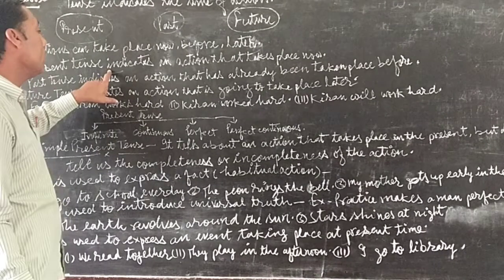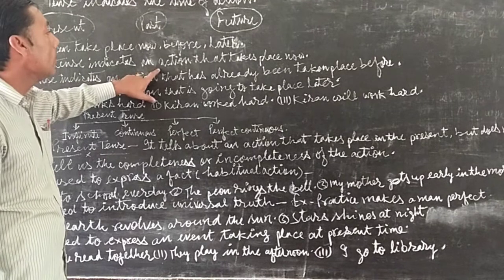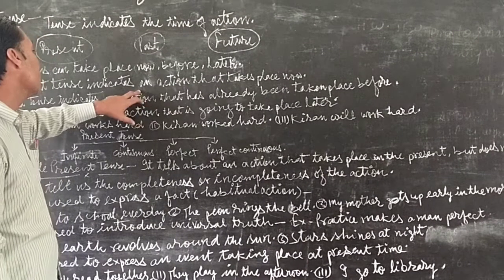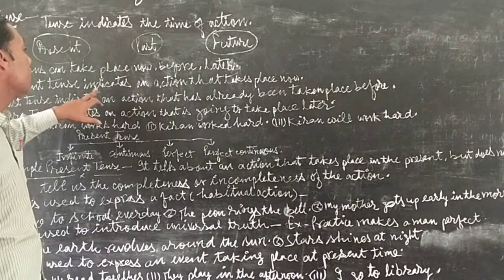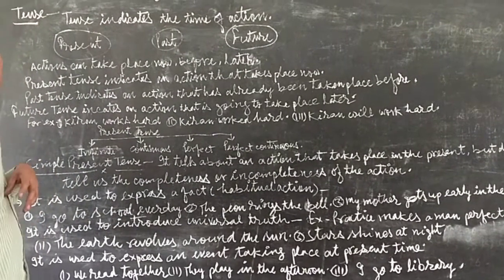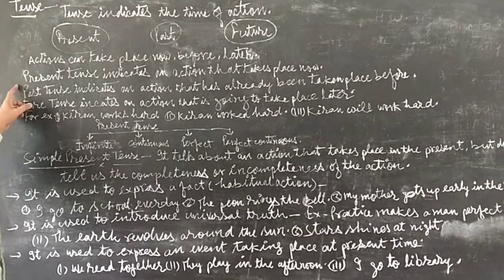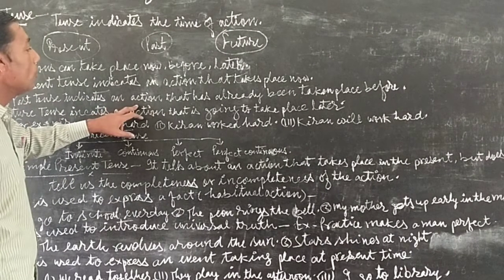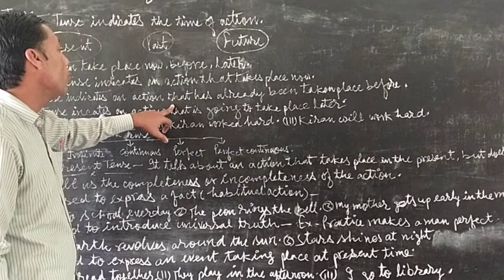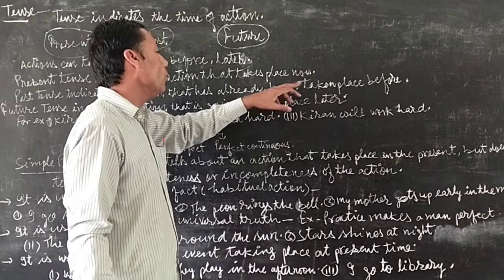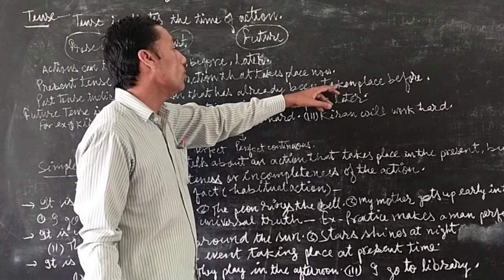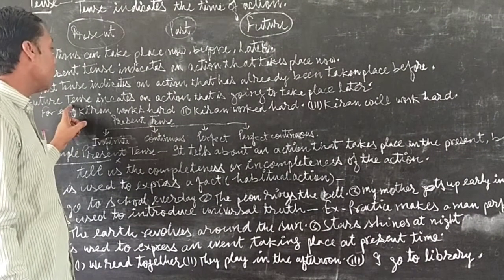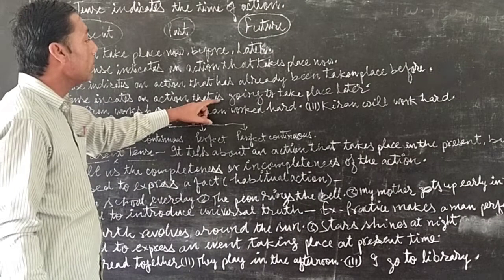The present time indicates an action that takes place now. The past time indicates an action that has already taken place before. The future tense indicates an action that is going to take place.